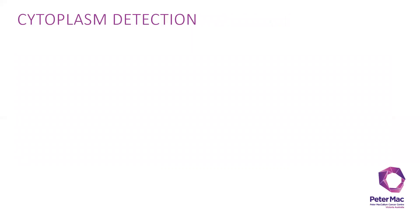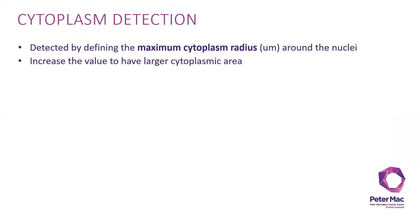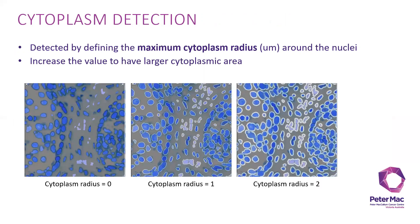After that, you do the cytoplasmic detection, which is done by defining the maximum radius of cytoplasm around the nuclei. You can increase the value to have a larger cytoplasmic area. In the picture here, the leftmost doesn't have any cytoplasmic radius, then one micron is the usual default size of cytoplasmic radius with the white halo around the cell. You can increase it to see a bigger halo around the cell.